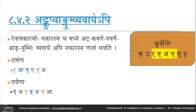With this general background of natva, consider the common kriyapada kurvanti — karoti, kurutaha, kurvanti. In kurvanti there is a repha, then vakara, akara, and nakara — exactly the same configuration as parvana (repha, vakara, akara, nakara). Yet there is no natva here. If natva applied, it would become kurvanti, then shtutva would apply, generating the asadhu rupa kurvanti. How is natva prevented in kurvanti? The answer lies in the structure of the tripadi — purvatrasidham.